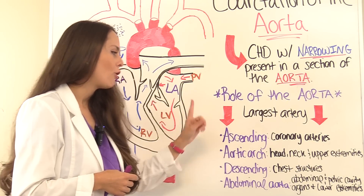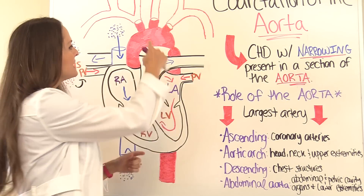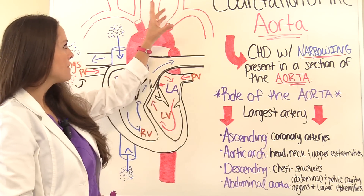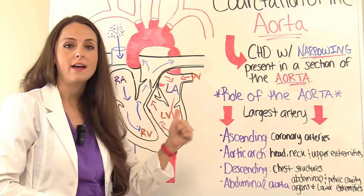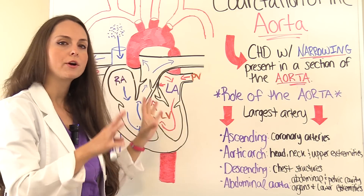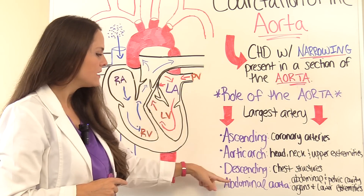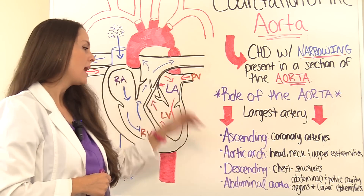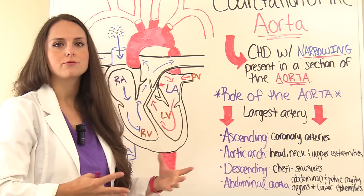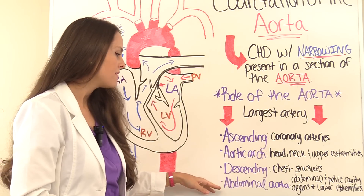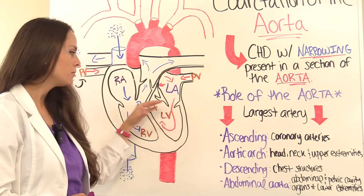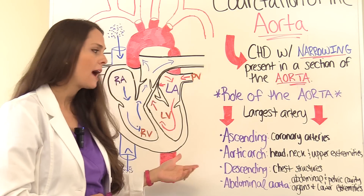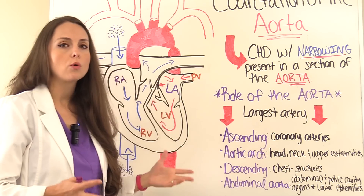Then we have the aortic arch, which forms a little arch. It goes up and branches off to feed the head — hence the brain — the neck, and the upper extremities. Then there's the descending aorta, which feeds the chest structures and ribs. Finally, the abdominal aorta is found just below the diaphragm and supplies the abdominal and pelvic cavity organs as well as the lower extremities.